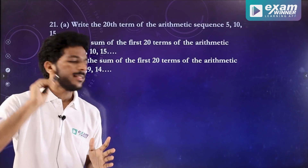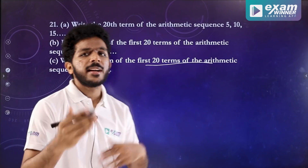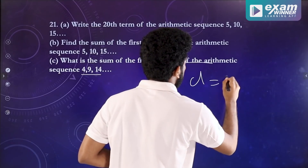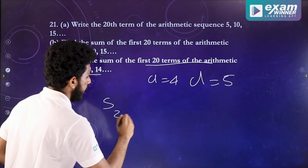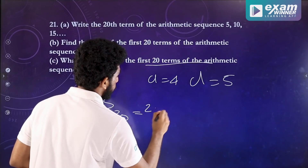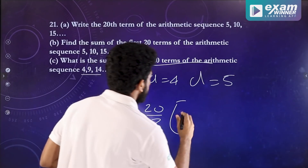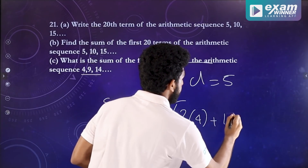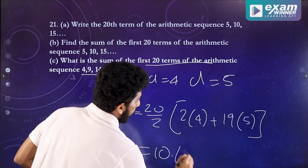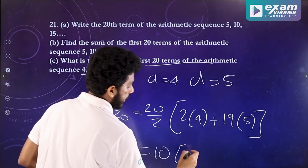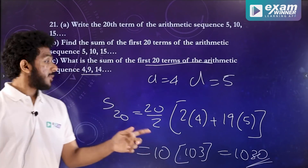Now, if we look at the first 20 terms of the sequence 4, 9, 14, the difference is 5 and A is 4. S20 equals N/2 into (2A plus (N-1)D), which is 20/2 into (2×4 plus 19×5). That gives 10 into (8 plus 95), which is 10 into 103, equal to 1030. That is the sum of the first 20 terms of this sequence.